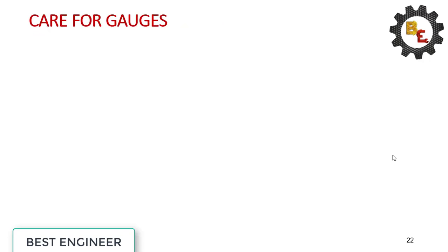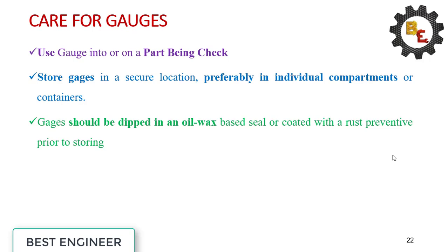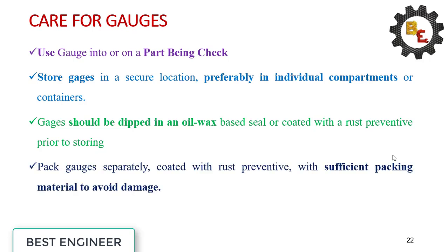Care for gauges. Use gauges into or on a part being checked. Store gauges in secure locations, preferably in individual compartments or containers. Gauges should be dipped in an oil wax-based seal or coated with rust preventive prior to storing. Pack gauges separately, coated with rust preventive with sufficient packing material to avoid the damage.